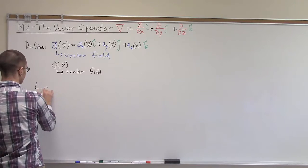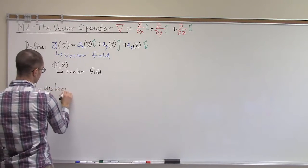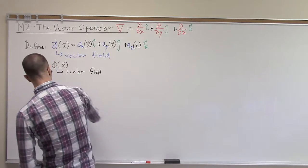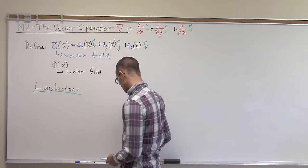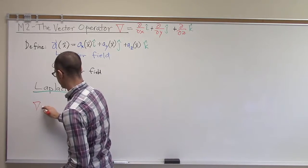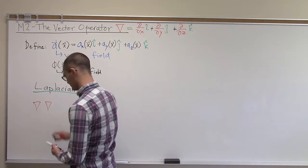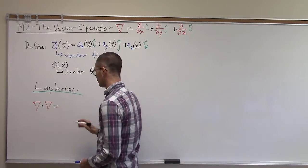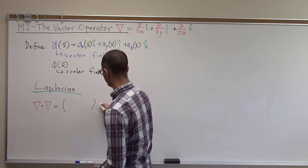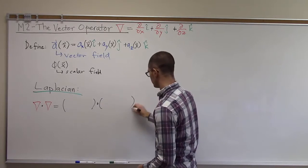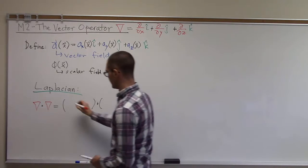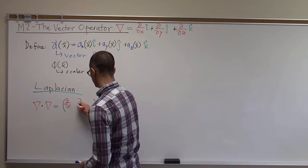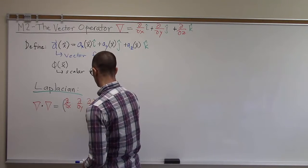We'll actually call that the Laplacian. So if we take the dot product of the vector operator with itself, nabla dot nabla, put that in two sets of brackets here. I'm going to add d by dx, d by dy, d by dz.